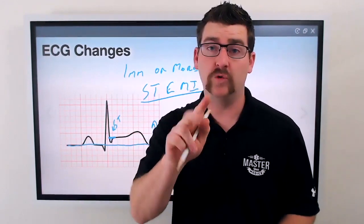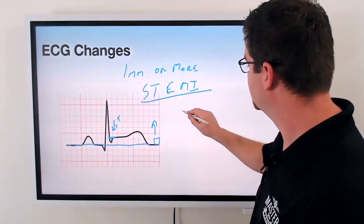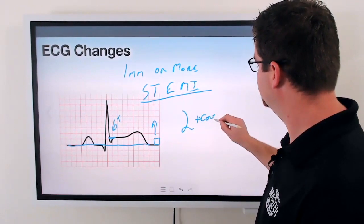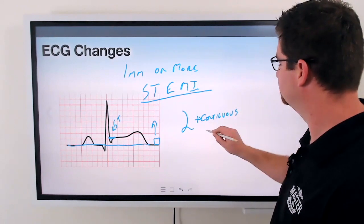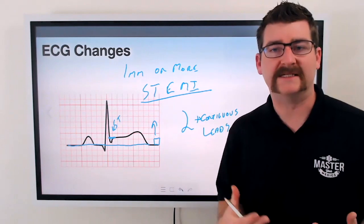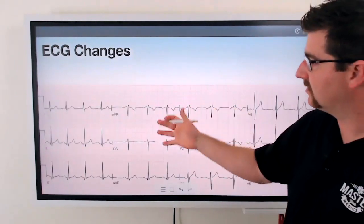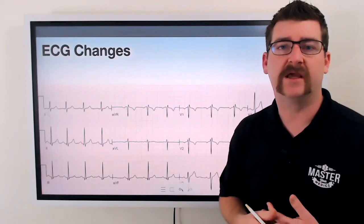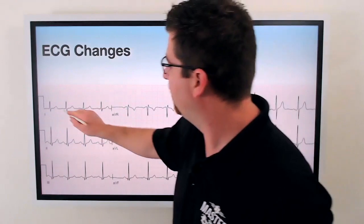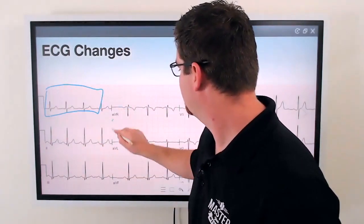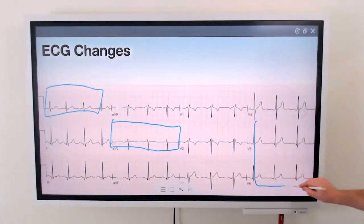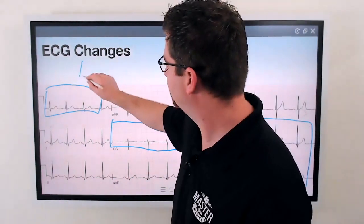We want to look for it in two or more contiguous leads. Our 12-lead EKG is divided into several sections across our body. We have lead one, AVL, and V5 and V6 — those are the lateral leads.